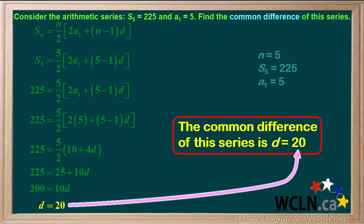So we can state that the common difference of this series, D, is equal to 20.